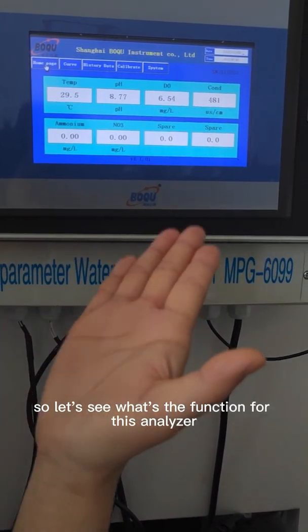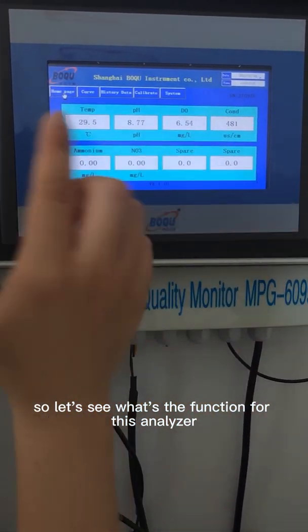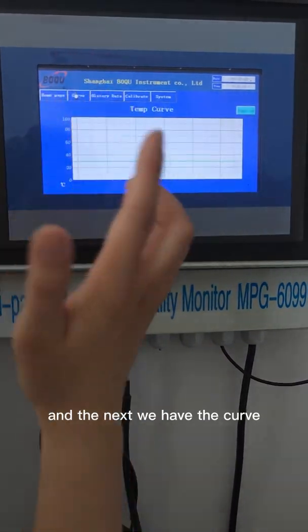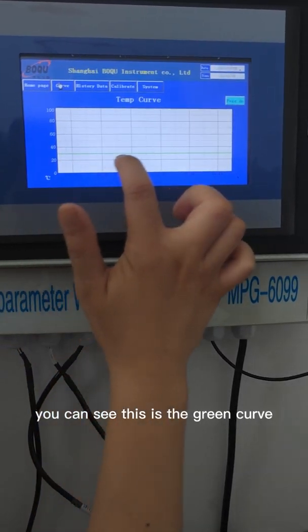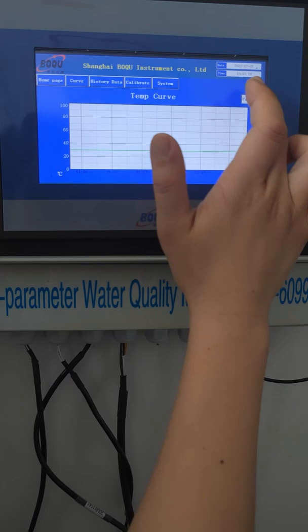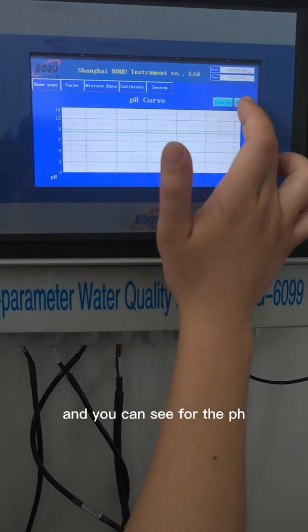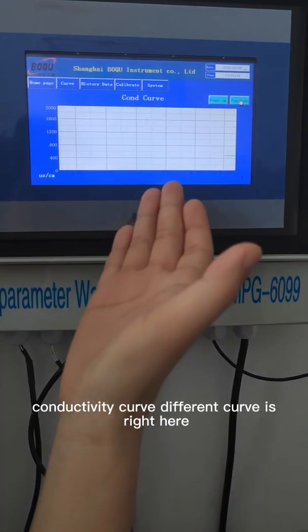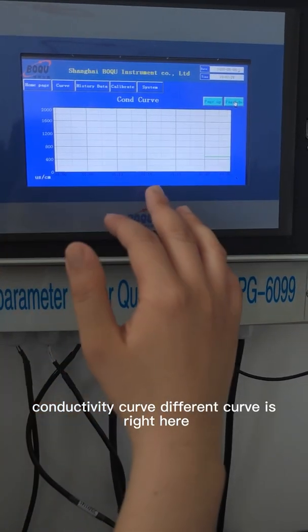Let's see what's the function for this analyzer. This is the home page and next we have the curve. You can see this is a green curve. Right now it is very stable and you can see the pH, dissolved oxygen, and conductivity curves, different curves right here.